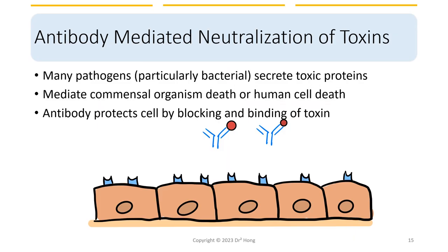Here is a graphical recap: many pathogens, particularly bacteria, can secrete toxic proteins or toxins that can cause cell death, including in our human cells as well as commensal organisms — the normal flora. When you have antibodies that can target these toxins, it can protect the cells by blocking and binding to these toxins.